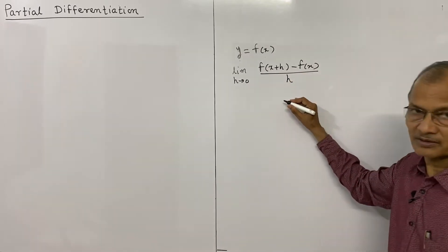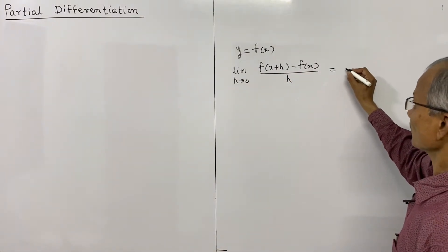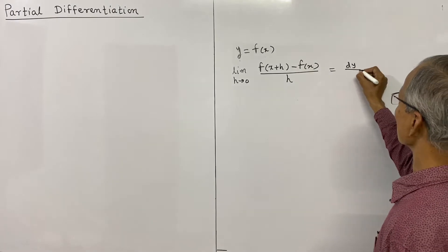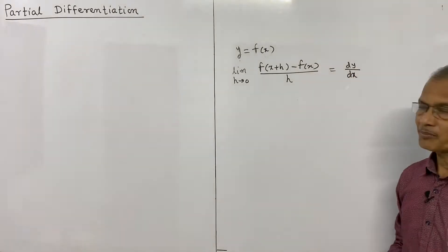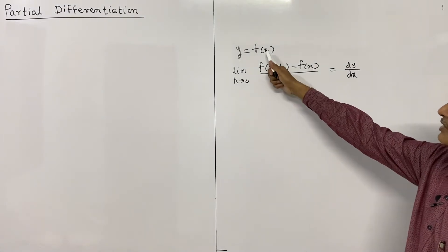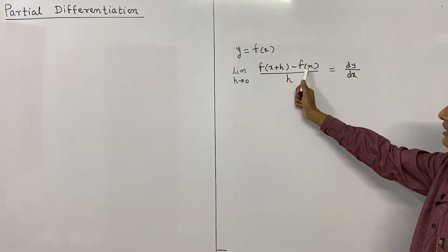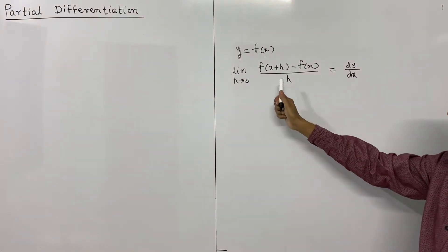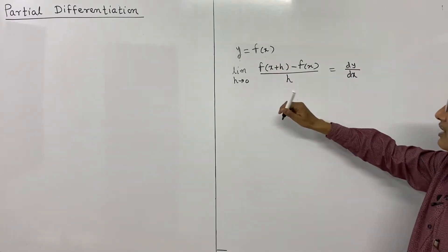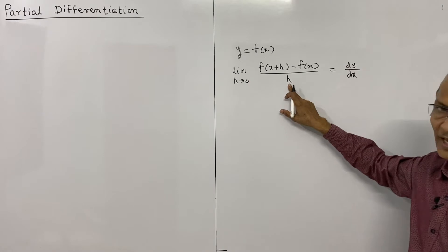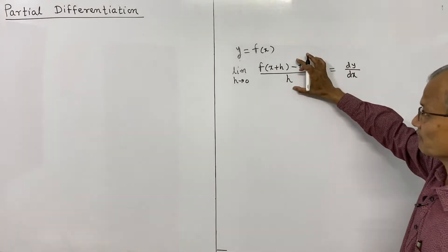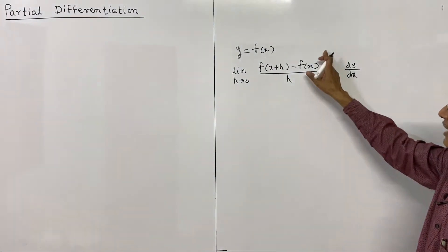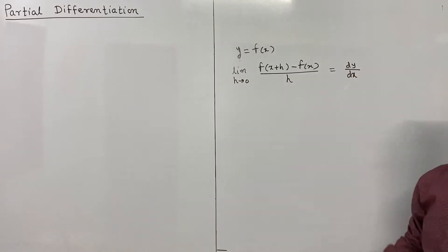If this limit exists, then it is known as the derivative of y with respect to x, and we denote it by dy/dx. What happens here is there is a change in x — a single variable — and x+h is the incremented value. This is the difference in the values of f divided by the difference in the values of x, that is h, and the ratio of this is taken.